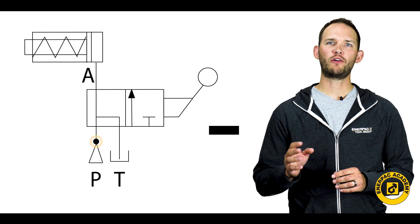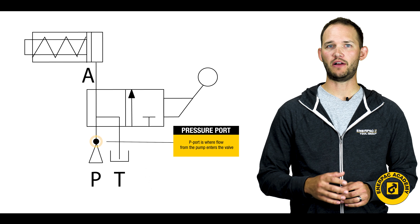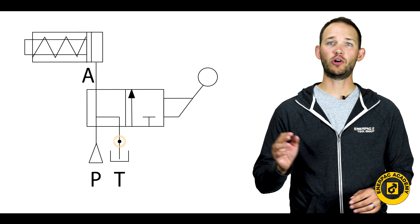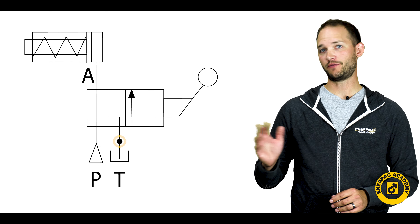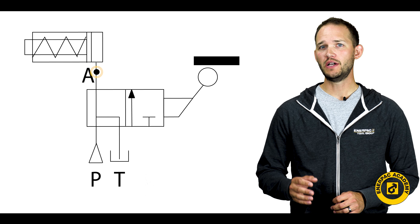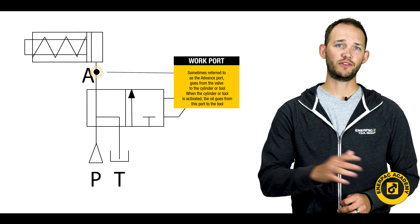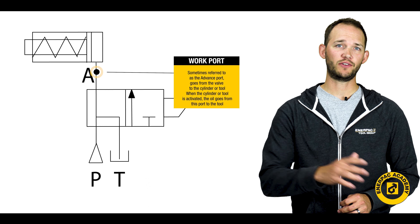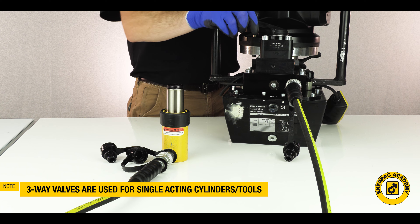The P port is where flow from the pump enters the valve. The T port goes from the valve back to the pump reservoir, allowing oil to easily return to the reservoir. The A port, sometimes referred to as the advanced port, goes from the valve to the cylinder or tool. When the cylinder or tool is activated, the oil goes from the port to the tool. Three-way valves are usually used to operate single acting cylinders and tools.